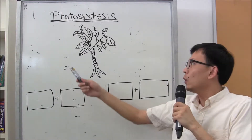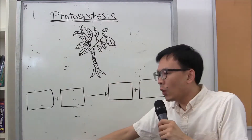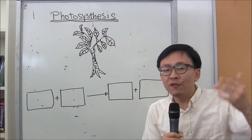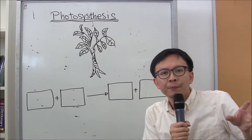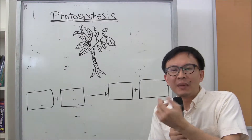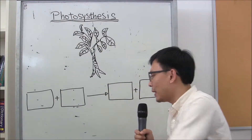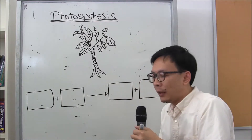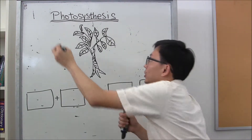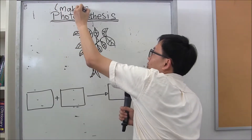Today we're going to learn about photosynthesis. Now, what is photosynthesis? You learned in P3 the different functions of plant parts, and one of the functions of leaves is that leaves make food. So photosynthesis is basically the name of the process for leaves to make food. Photosynthesis is a process where leaves make food.